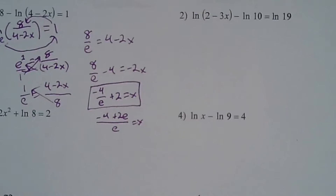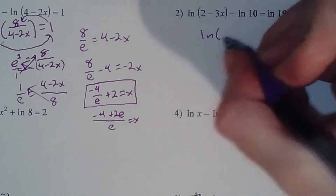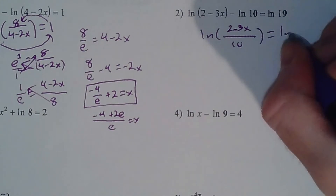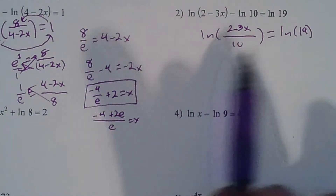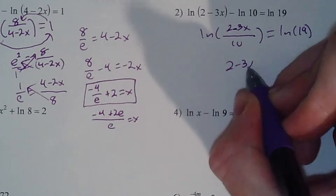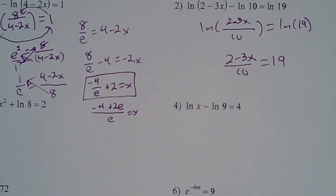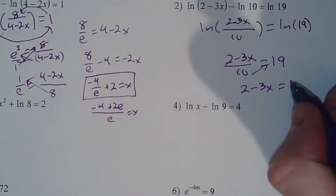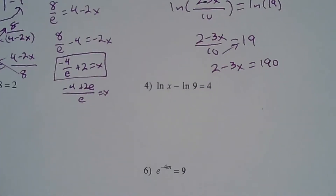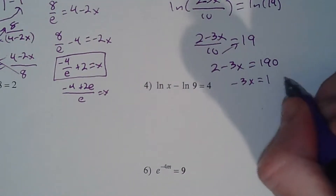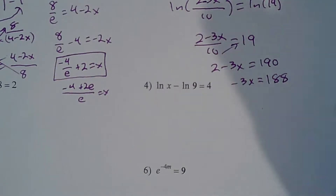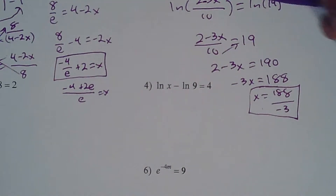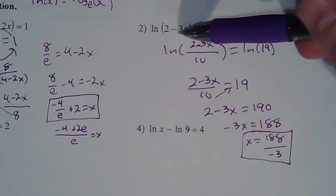Let's go over number 2. Again, we see that subtraction — that means division. So we have the LN of (2 minus 3x) all over 10 equals the LN of 19. Now that we have LNs on both sides of the equation, we say they're gone: 2 minus 3x over 10 equals 19. Again, we do that half cross multiply — the 10 goes up to that 19. So 2 minus 3x equals 190. Subtract 2 on both sides: negative 3x equals 188. Divide both sides by negative 3 and just leave it as that fraction. Always double check by plugging back into the original — and here it is okay because that's going to be positive overall.